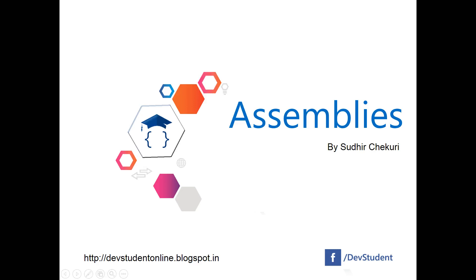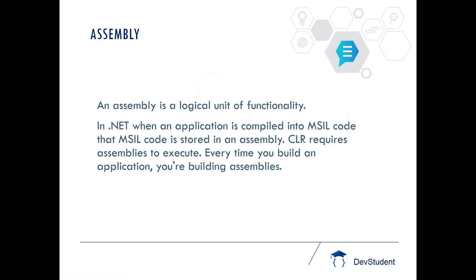Hi, this is Sudhir. This is an assemblies tutorial. An assembly is a logical unit of functionality — if you want to deliver a logical functionality, the output deployable format is going to be an assembly. It can be a .dll or a .exe. In .NET, when an application is compiled for the first time, the source code will be converted into MSIL code and that MSIL code will be stored in the format of an assembly.